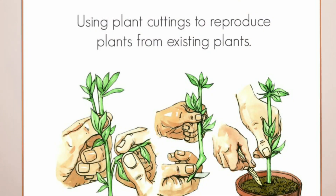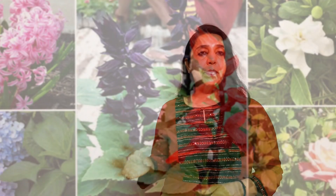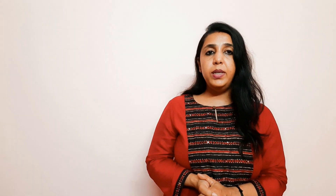Let's look at reproduction from stem. You might have noticed that money plant, hibiscus, and rose grow from stems. Have you ever noticed which part of the potato or ginger you eat? They are actually stems. If you take a potato that has a bud on it and you grow it, a new plant will start emerging — but only if you provide it with proper water and sunlight.